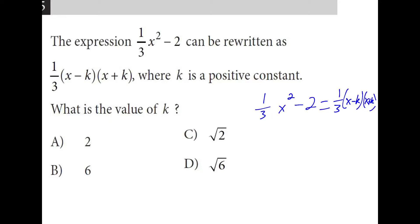These are equivalent expressions because they can be rewritten. The difference is one third is multiplied by everything on the right and only the first term on the left, so I can avoid that situation by multiplying everything by three.